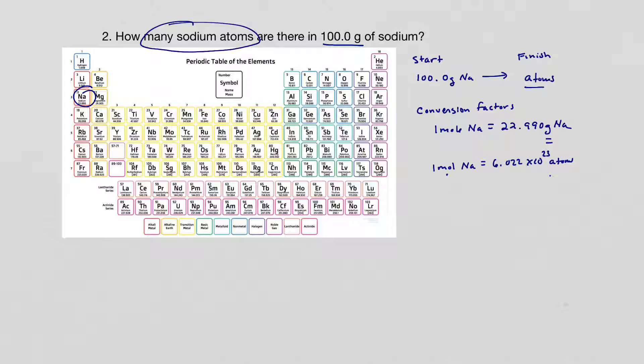All right, so it's time to solve the problem. So I'm going to do it down here. We take 100.0 grams of sodium, multiply by a conversion factor. I'm going to pick this conversion factor right here. I guess I'll just circle it. And that means I put the 22.990 grams on the bottom, and 1 mole goes on top. And then I need my second conversion factor. And that's going to be 1 mole of Na on the bottom, and 6.022 times 10 to the 23rd atoms on top.